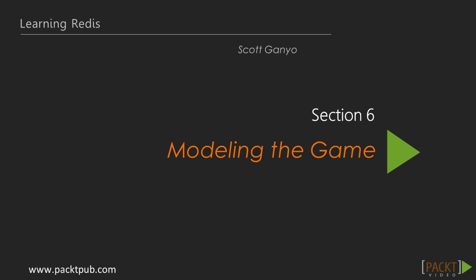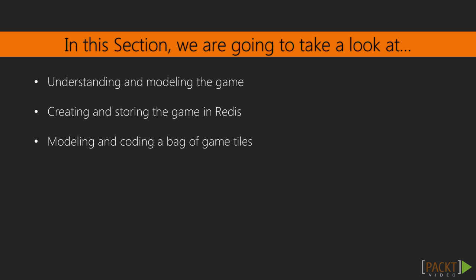Section 6: Modeling the Game. Now we're going to get into some serious modeling as we take on the game itself. In this section, we're going to model the game, we'll create, store, and retrieve the game model in Redis, and we'll also look at modeling a bag of game tiles, which will be absolutely critical to our gameplay.